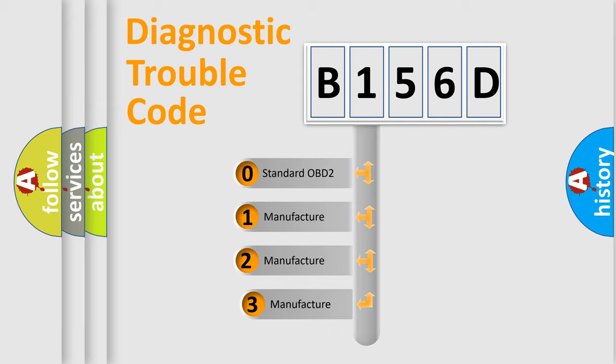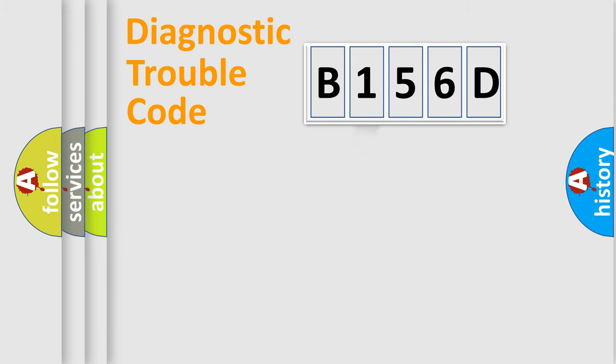If the second character is expressed as zero, it is a standardized error. In the case of numbers 1, 2, 3, it is a car-specific error.